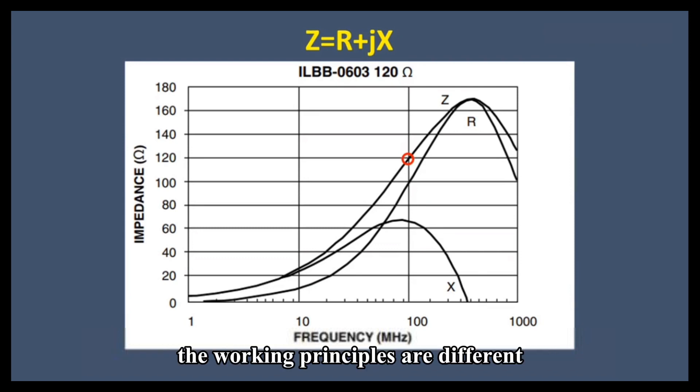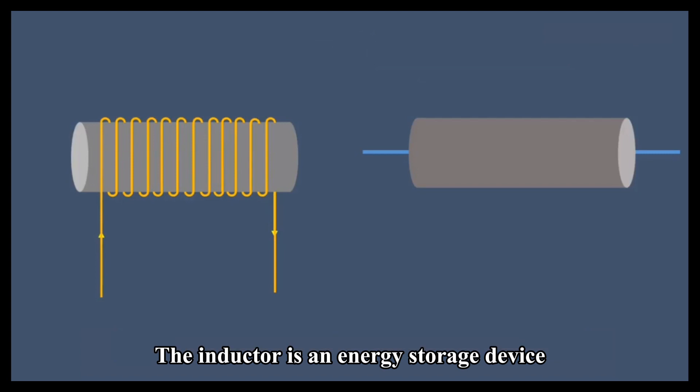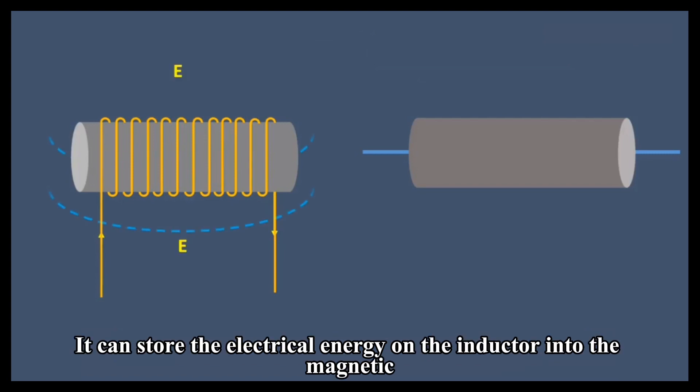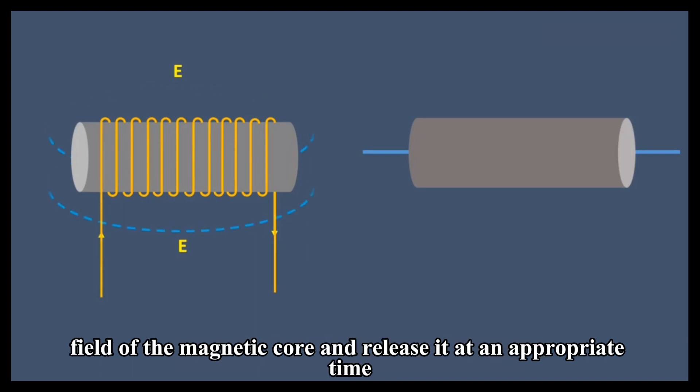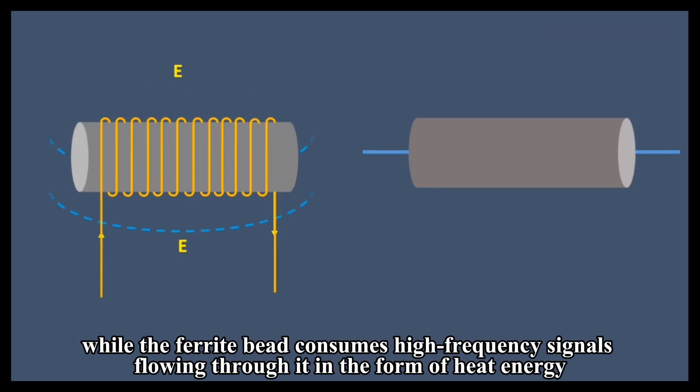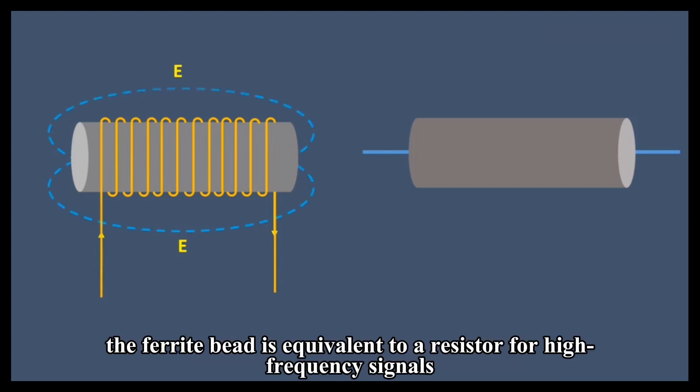Thirdly, the working principles are different. The inductor is an energy storage device. It can store electrical energy into the magnetic field of the magnetic core and release it at an appropriate time, while the ferrite bead consumes high-frequency signals flowing through it in the form of heat energy. The ferrite bead is equivalent to a resistor for high-frequency signals.